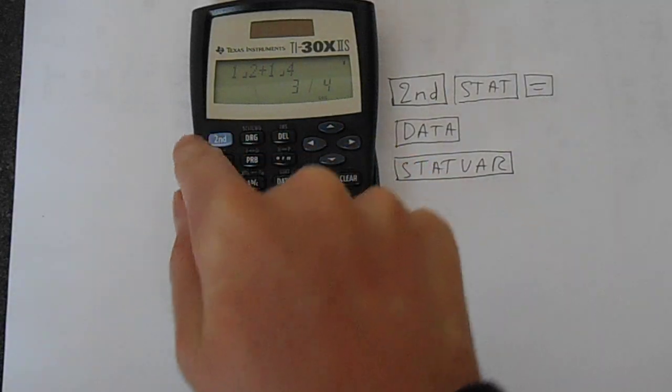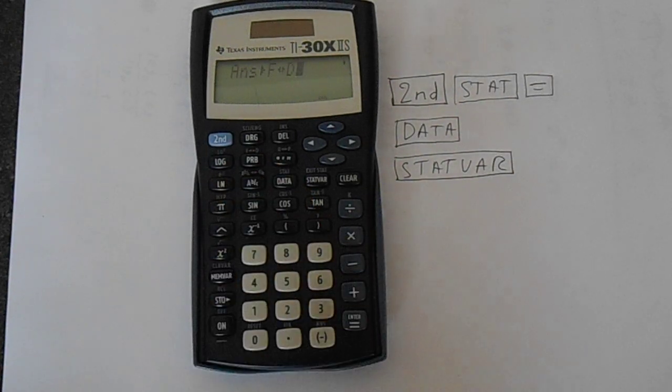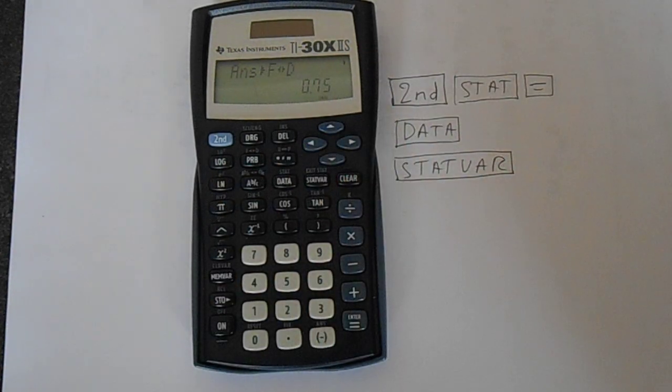And you can actually convert this if you go second function and then you've got this f to d button. Press that, press equals, and we'll get 0.75. So it can display the numbers in both forms and you can go back and forward.